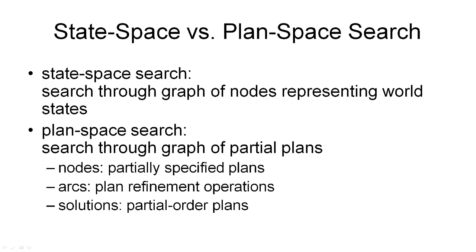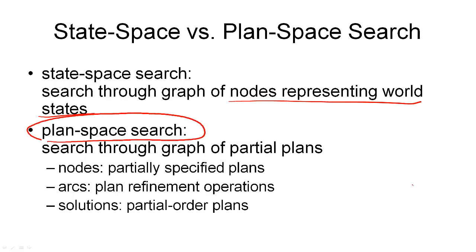As a reminder, let's look at state space search. In state space search, we searched through a graph of nodes representing world states. If we were doing graph search, the graph we were generating while doing search looks exactly like the graph of the state transition system. This is not the case for plan space search, which is what we'll be looking at here — we are searching through a graph of partial plans.